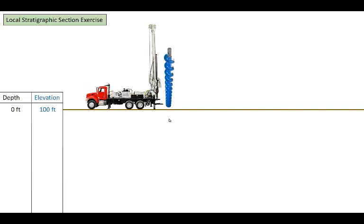Okay. So in this exercise, we're going to say that the drill rig is on the surface of the earth. So the depth is zero, but the elevation is 100 feet above sea level. The drillers are going to start to drill that auger down into the ground. And they're going to keep track of what the sediment looks like as it's coming up out of the auger flight.